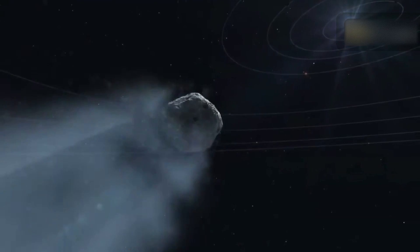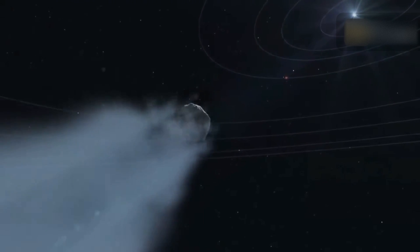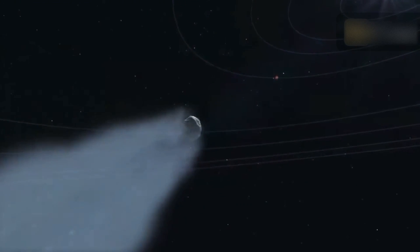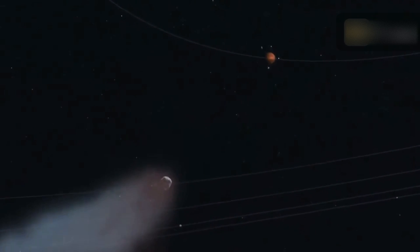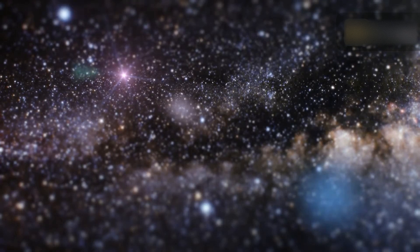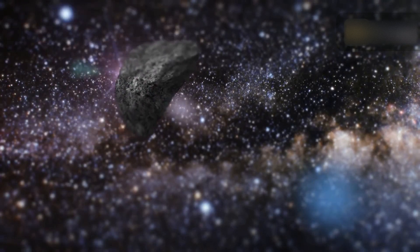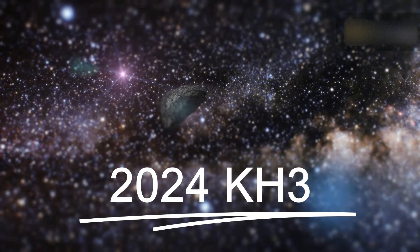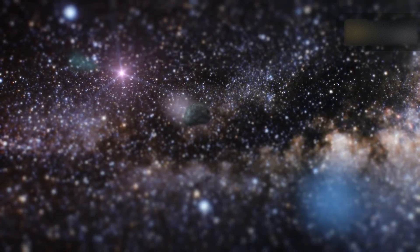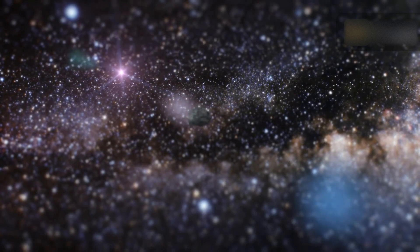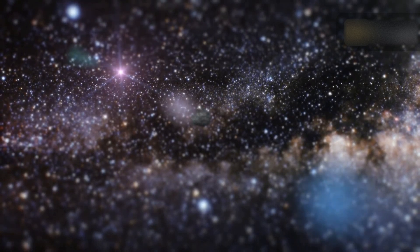NASA has warned that a huge space rock is approaching Earth at a speed of 11 kilometers per second. Let's see if this space object will collide with Earth. NASA announced in a recent statement that an asteroid called 2024 KH3 is heading directly towards Earth. NASA GPL has classified 2024 KH3 as a potentially hazardous asteroid due to its expected close approach to Earth and its huge size.